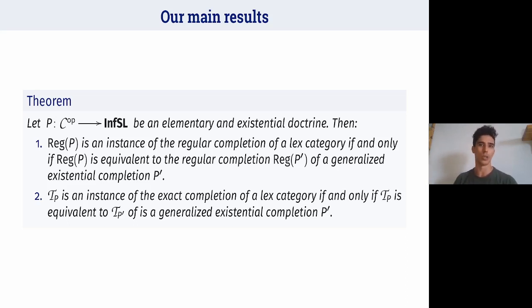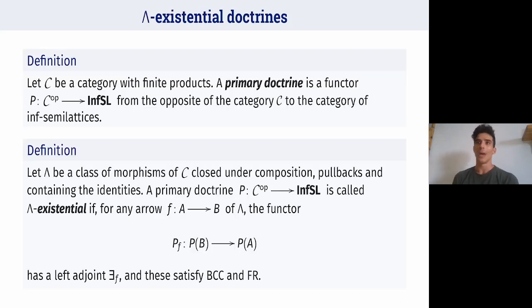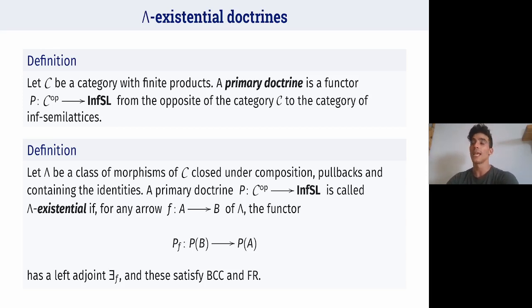I want to recall some basic notions about primary and existential doctrines and show examples and applications of this theorem. The first notion is the notion of primary doctrine, which is a functor from the opposite of a category with finite products into the category of inf-semilattices.